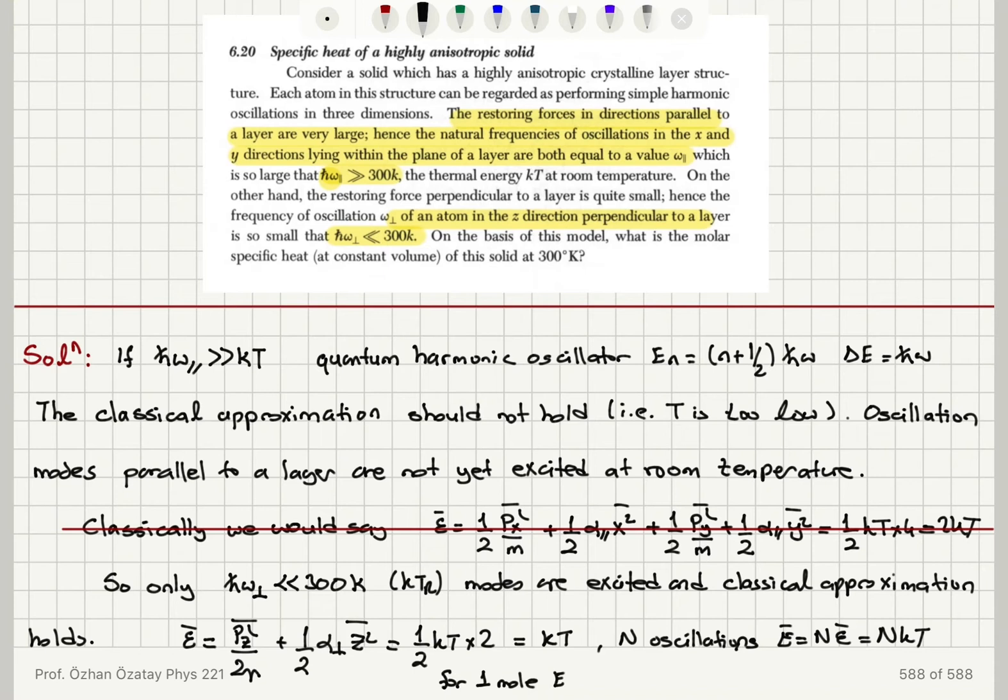I would have total energy to be NA kT, Avogadro's number times Boltzmann constant T, which is RT, which will give me for molar specific heat dE/dT at constant volume to be equal to R. So this would be my answer.